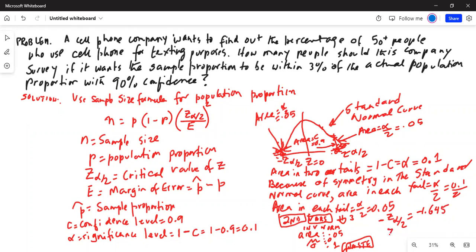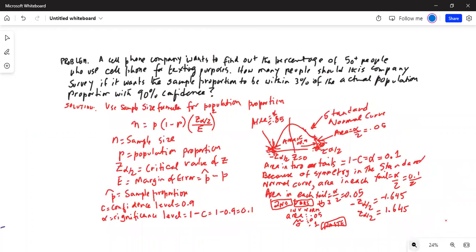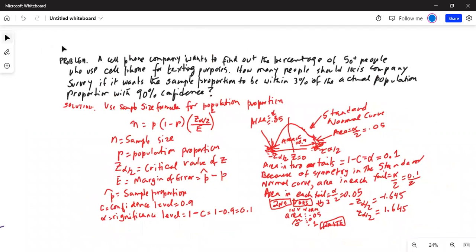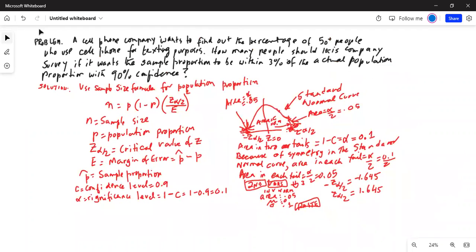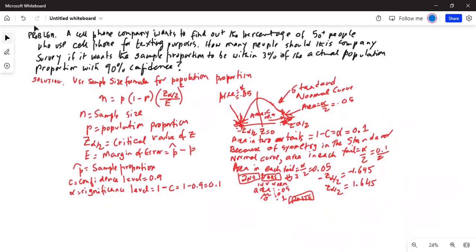So because of symmetry, positive z alpha by 2 will be the same value without the negative sign. This is the z alpha by 2 that we will plug in the equation. So let me create some space for myself.